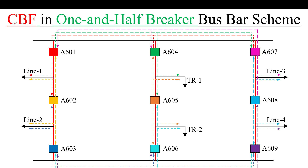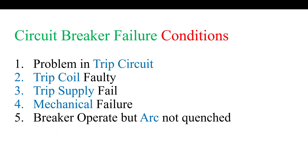There are a total of five circuit breaker failure conditions. The first condition is a problem in the trip circuit — if the relay gave a trip command but due to a problem in the trip circuit the circuit breaker does not operate, this is circuit breaker failure. The CBF protection relay will then operate and isolate the circuit breaker.